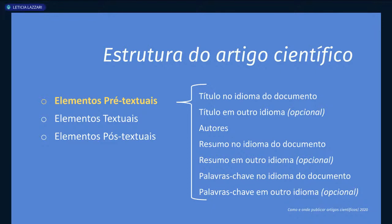Os elementos pré-textuais trazem uma apresentação do artigo — é como a folha de rosto do trabalho acadêmico, mas em formato diferente. Você vai ter o título, os autores, o resumo e as palavras-chave. Alguns elementos são opcionais, relacionados aos elementos em outro idioma. Mas como a maioria dos periódicos busca internacionalização, esses elementos já costumam ser obrigatórios.